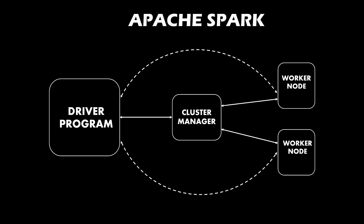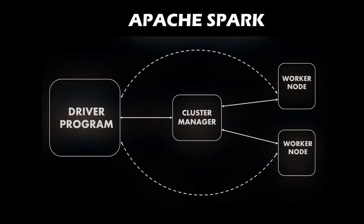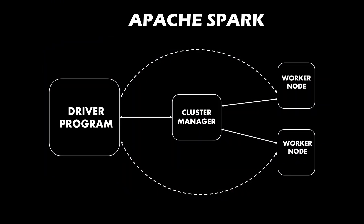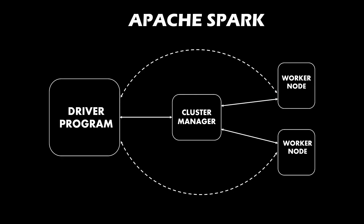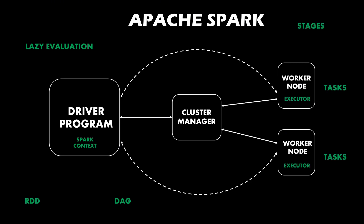Now let's dive deep into understanding all the individual components in detail with an example. Apart from the three main components, there are different things we need to understand to get detailed knowledge of Apache Spark. The keywords are Spark Context or Spark Session, RDD, Lazy Evaluation, DAG, Executor, Stages, and Tasks. If you are an absolute beginner, please don't get scared about these keywords — we are going to understand all of them with a simple example.